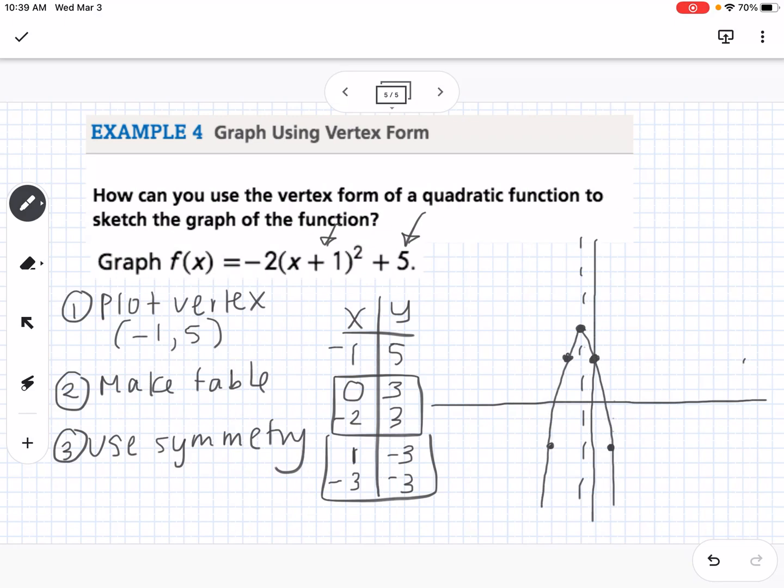It's always good to kind of ask yourself, does this make sense? So is my graph reasonable based on what I know? So that negative out front tells me my graph is going to open down and have the vertex being a maximum, which is true. We know that the 2 is going to make my graph narrow, and that graph looks pretty narrow. And then we've already plotted the shifts to the left and up based on our h and k values. So that is how we use...